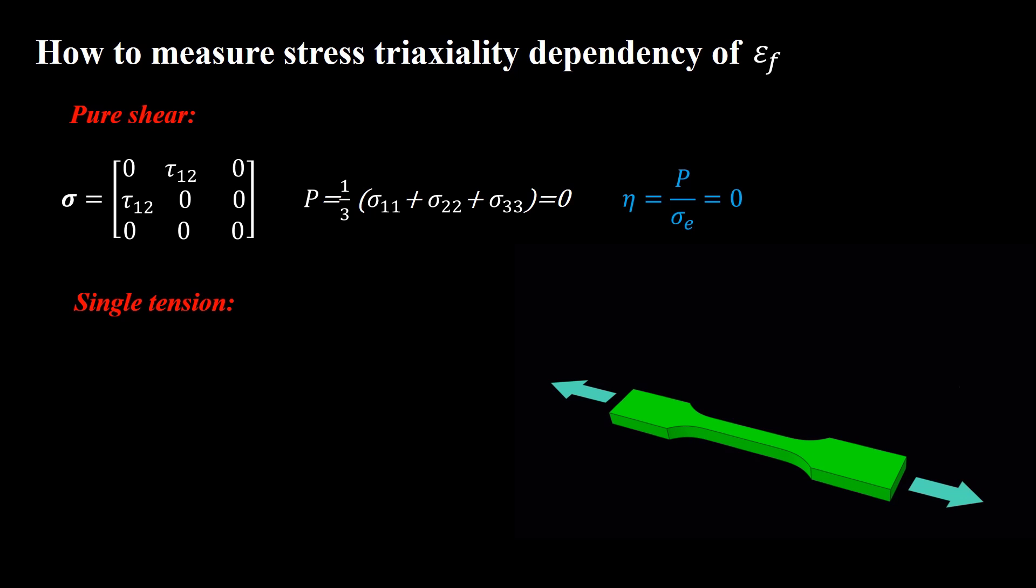Usually results of single tension tests are available for materials. Under single tension test, the stress tensor is now calculate the hydrostatic stress and equivalent Mises stress from the stress tensor. Then using these two values, stress triaxiality is one divided by three. Note that in a single tension specimen, stress triaxiality is equal to this value up to the onset of necking and then steadily increases inside the neck with increasing plastic deformation.